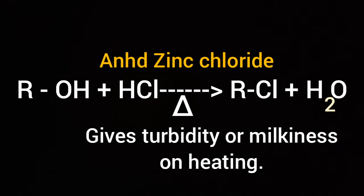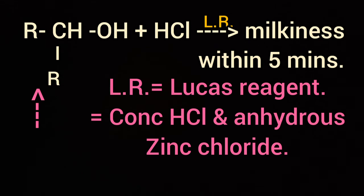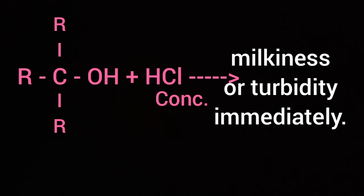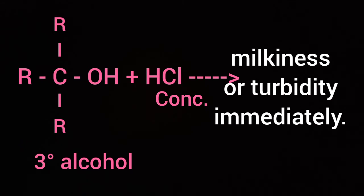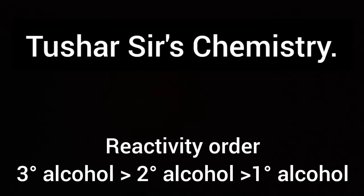Secondary alcohol on treatment with Lucas agent gives turbidity in 5 minutes. Whereas tertiary alcohol reacts with concentrated HCl and gives turbidity immediately. So the reactivity order towards Lucas agent can be written as shown on the screen. Secondary alcohol is in between tertiary alcohol and primary alcohol.